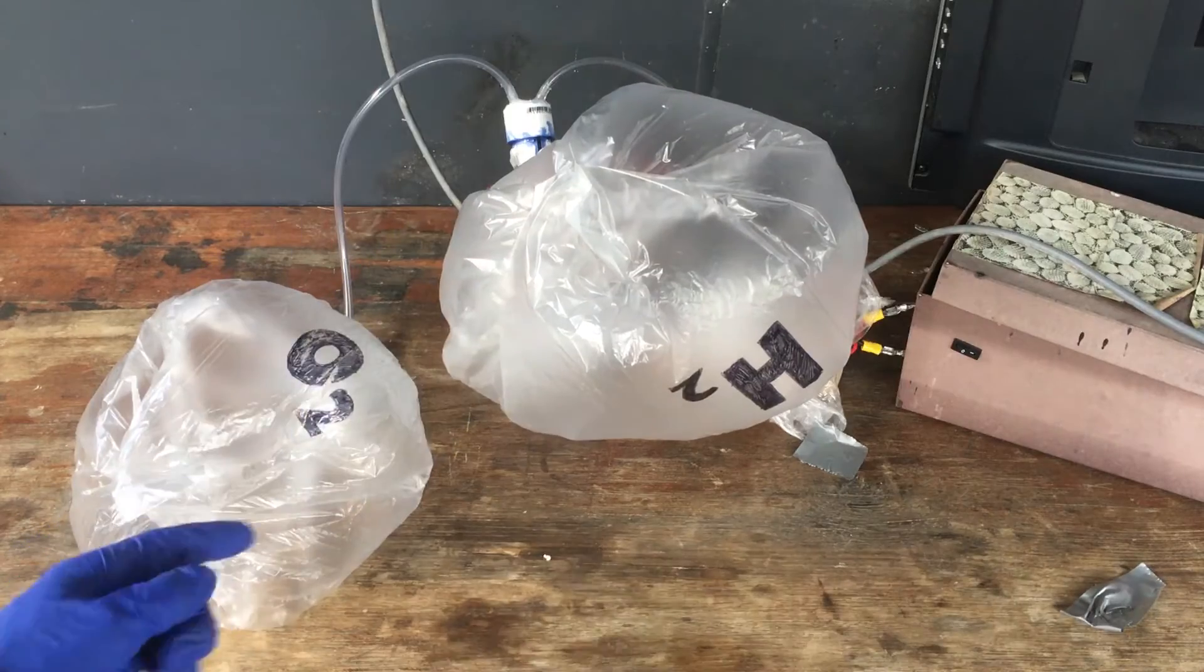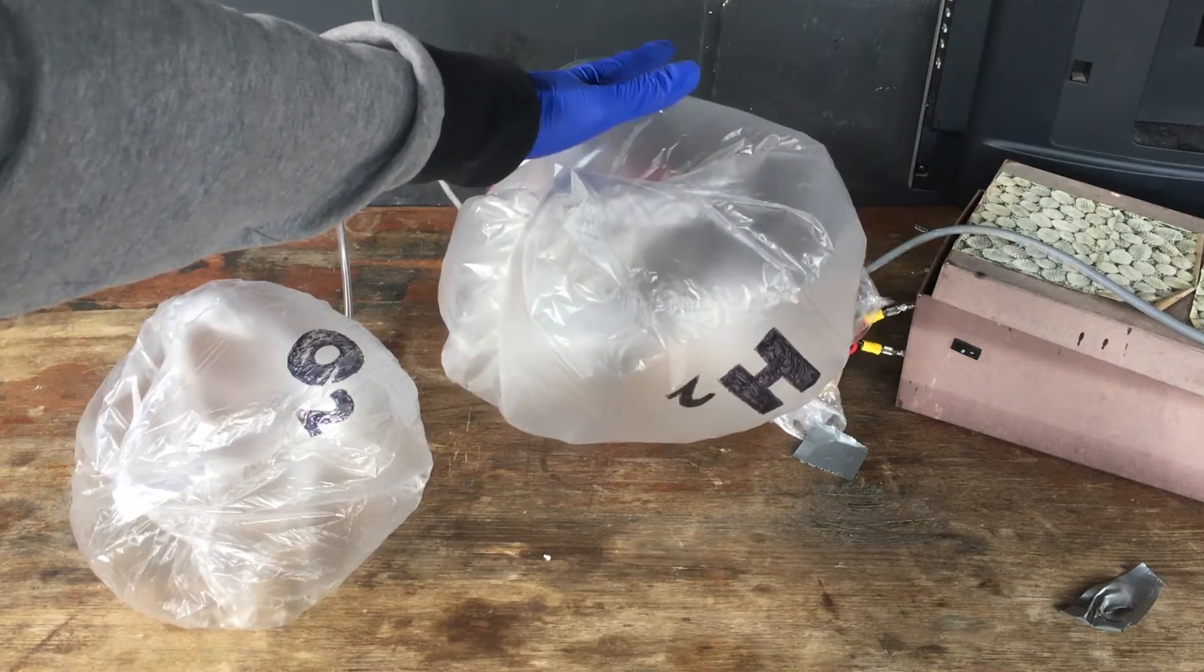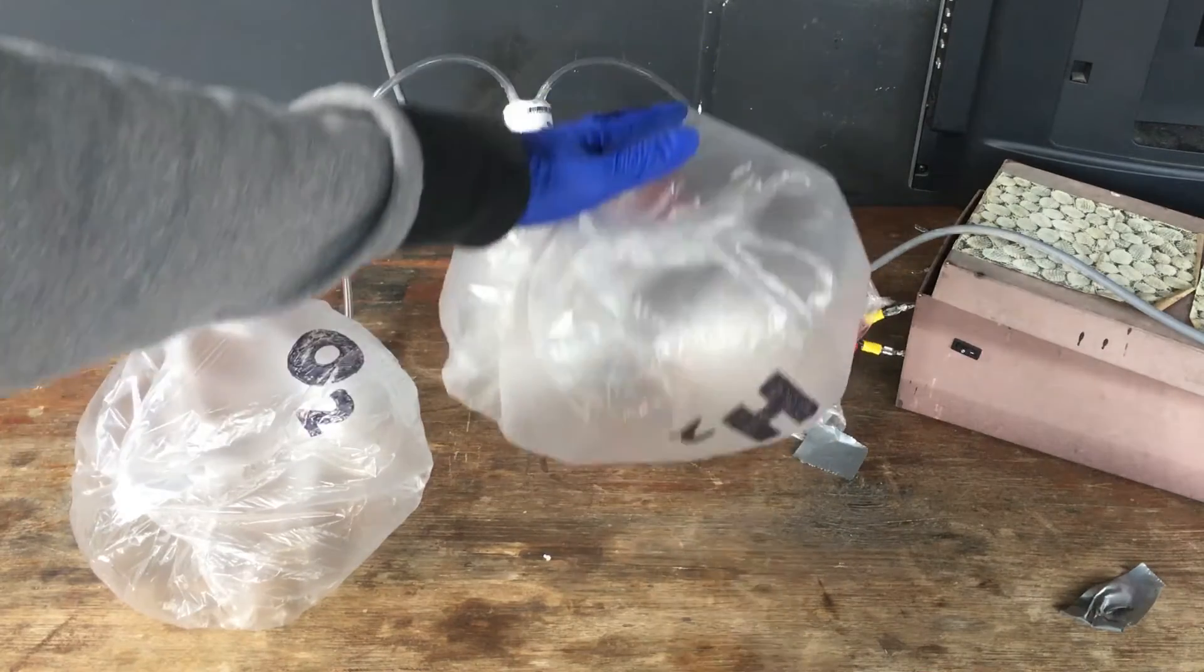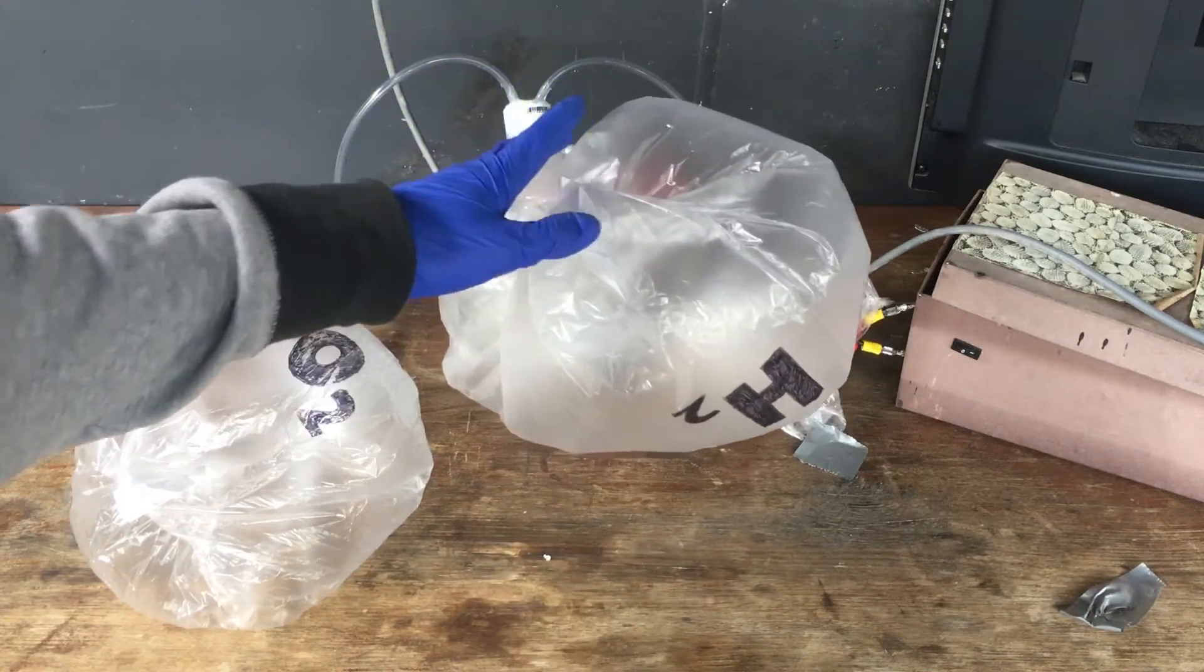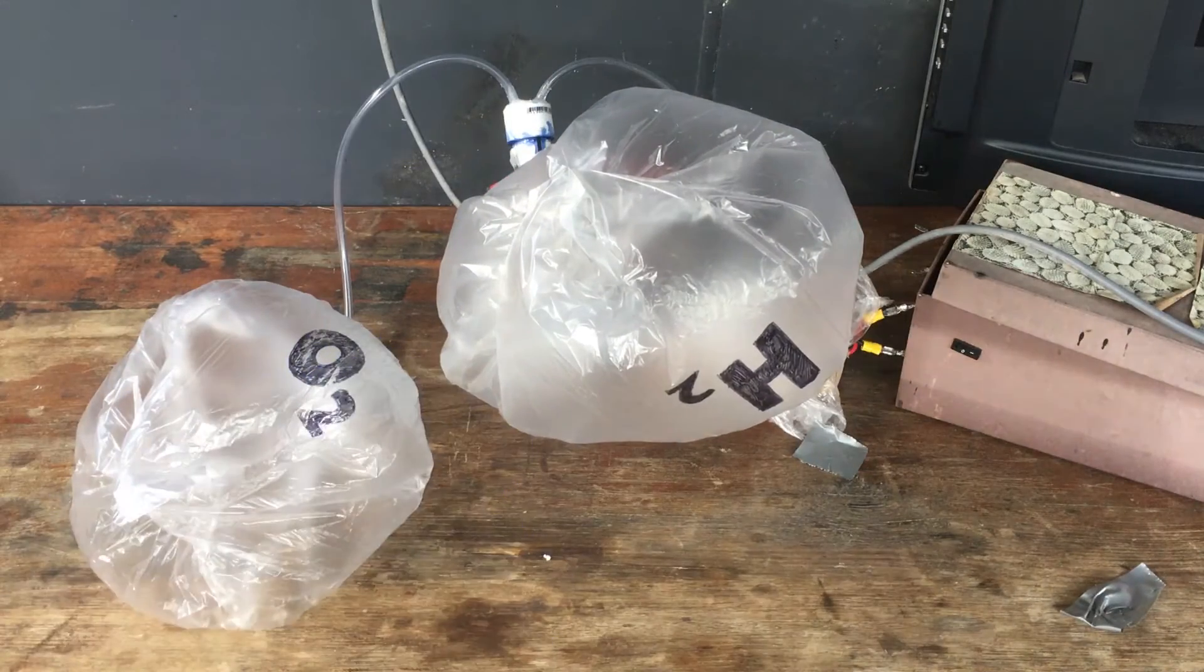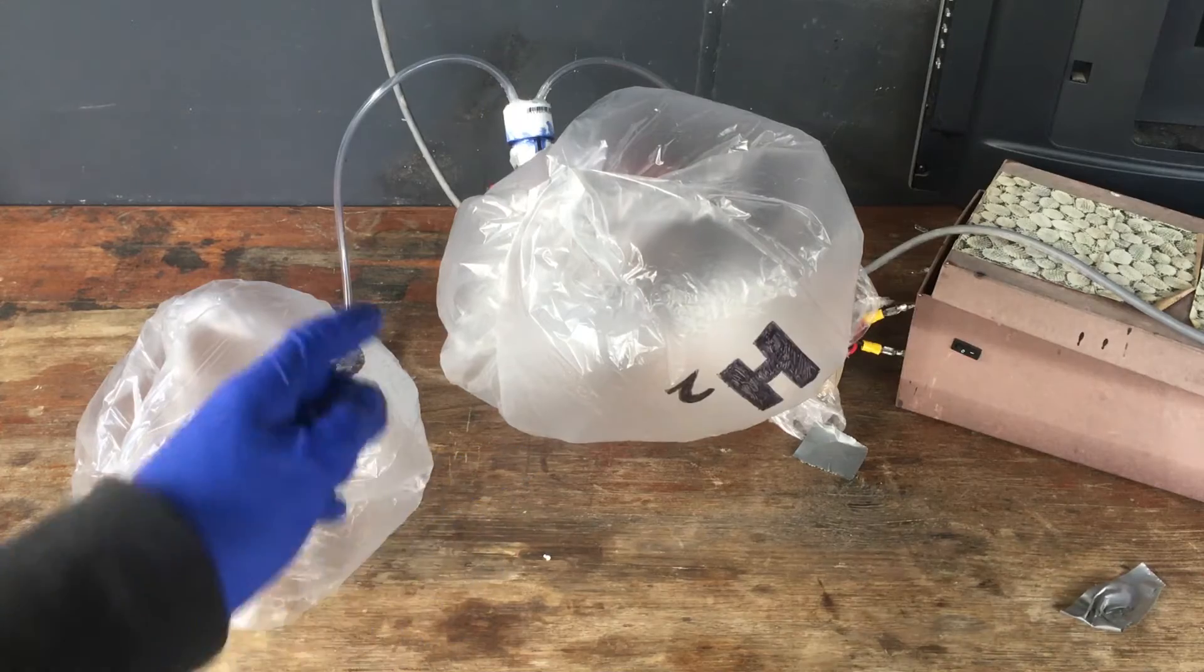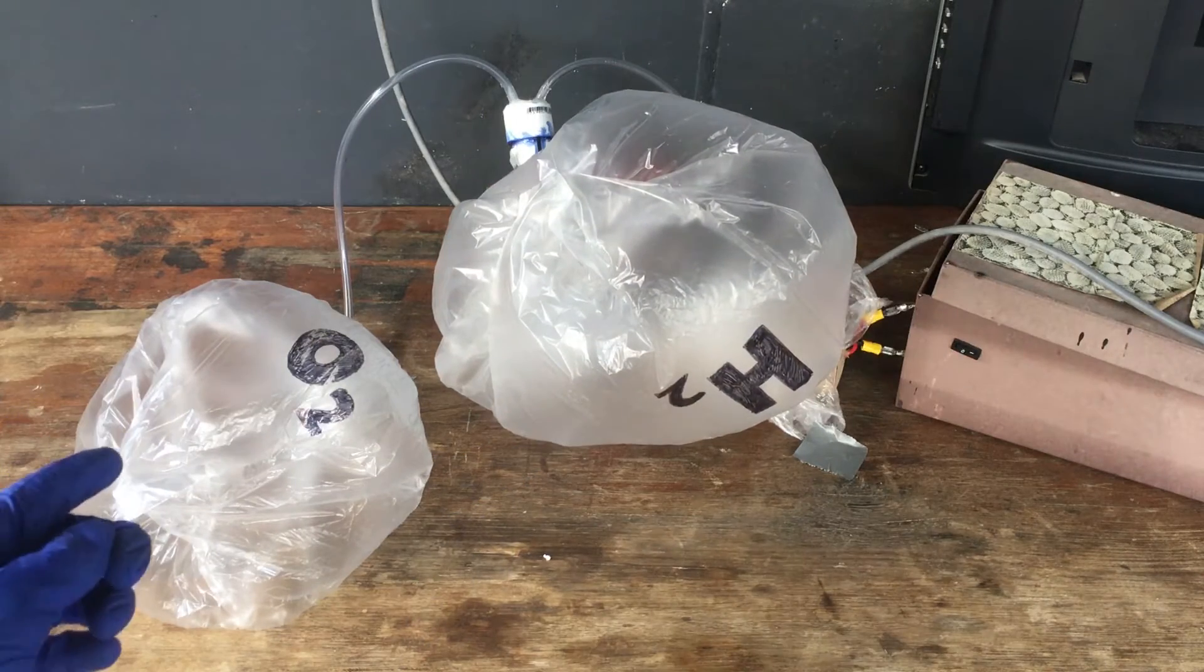Well, there we are. Hydrogen and oxygen made by electrolysis of water. You can see we have enough hydrogen now that it is trying, at least, to get off the ground and float. So I think we've got enough of the gases for our initial test. I will disconnect those and turn off the cell and then we will examine how everything went.